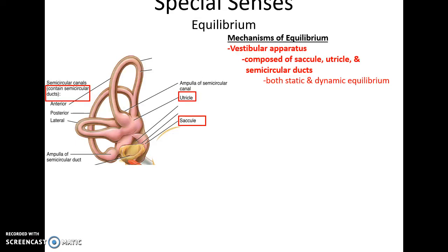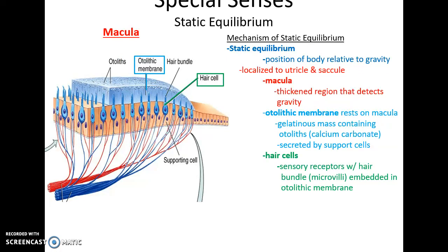Equilibrium is found within the vestibular apparatus, which is composed of the saccule, the utricle, and the semicircular ducts within the semicircular canals — for both static and dynamic equilibrium. Static equilibrium — the relative position of the body compared to gravity — is localized to the utricle and saccule within the vestibule. There is a thickened area in these structures called the macula, containing a gelatinous mass called the otolithic membrane.